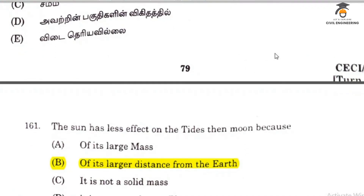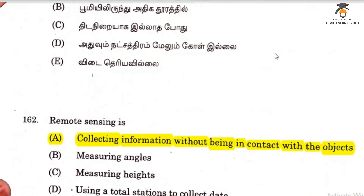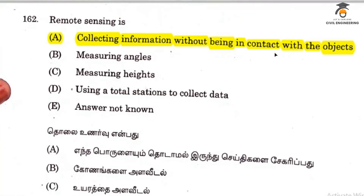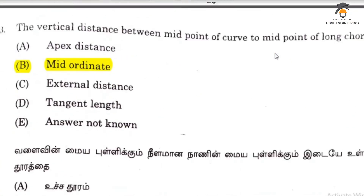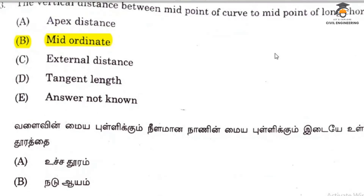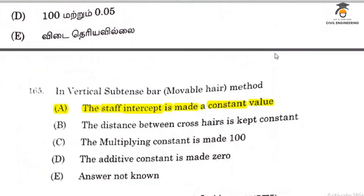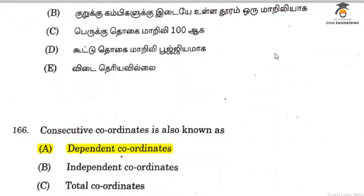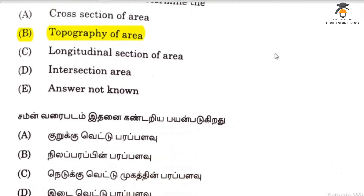Question 161 relates to large distance from the earth. Remote sensing is the collection of information without being in contact with the object. The vertical distance between the midpoint of a curve to midpoint of the long chord is the mid-ordinate. The desirable multiplying and additive constants of a tachymeter are 100 and 0. In vertical subtense bar method, the stadia intercept would be made of a constant value. Question 166 relates to dependent coordinates.